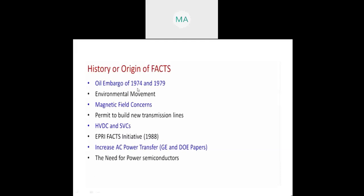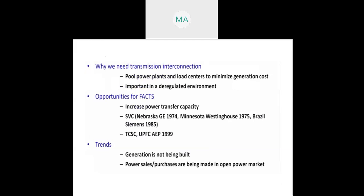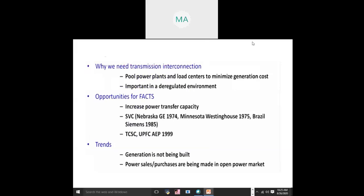If we look at the system, power is transferred between two systems. From source to load there will be some impedance. In the system we have Source 1 and Source 2 connected to a load center. Impedance is indicated with X and load angle is indicated with alpha. If the load angle increases, whatever the power consumption also increases.